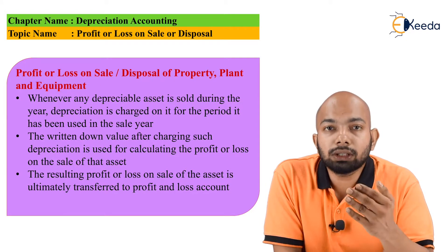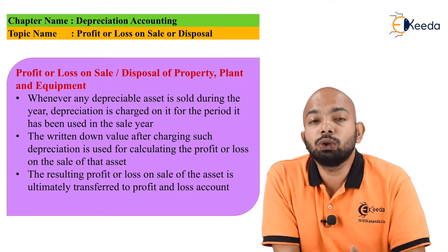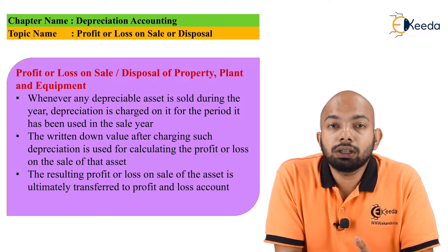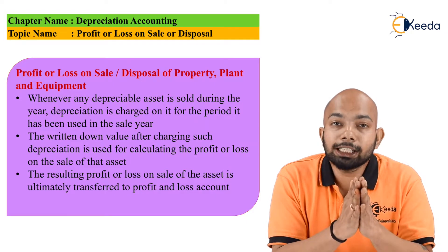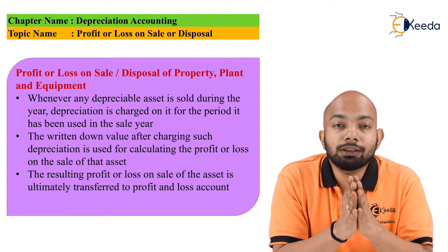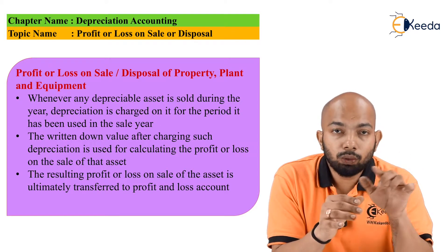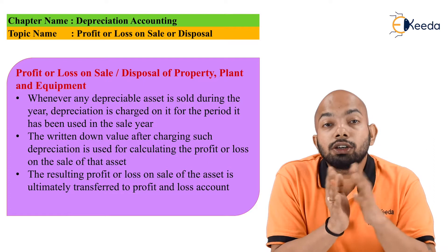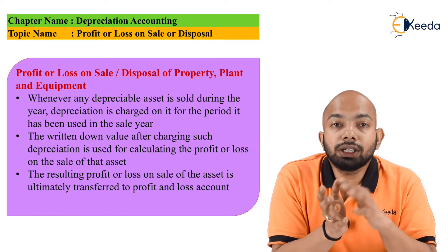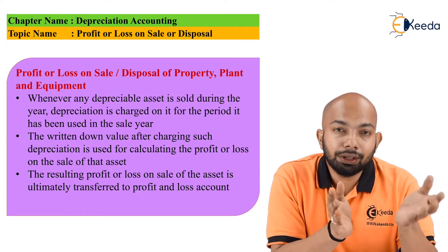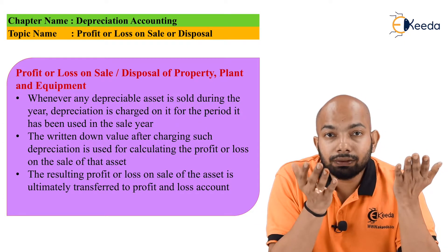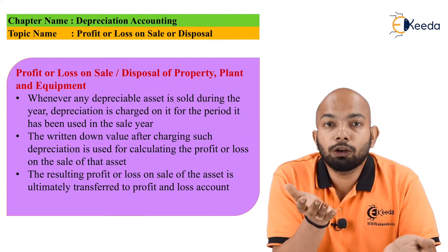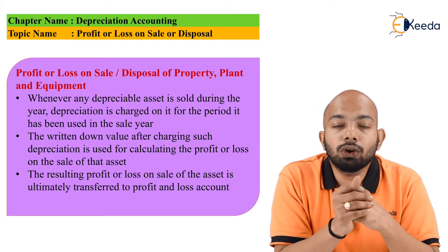If you sell the asset at a value above the written down value, that means there is a profit. If you sell it at a value less than the written down value, that means there is a loss. So the written down value — that is original cost minus total depreciation up to the date of sale — has to be compared with the sale price. If the written down value is higher and the sale price is lower, there is a loss. If the written down value is lower and the sale price is higher, there is a profit.